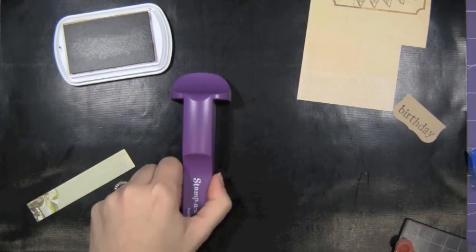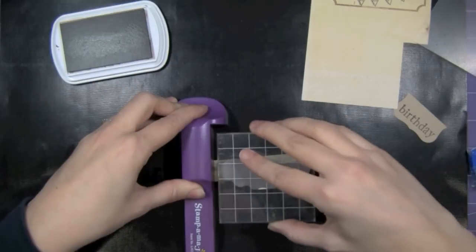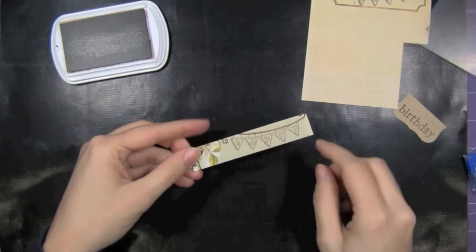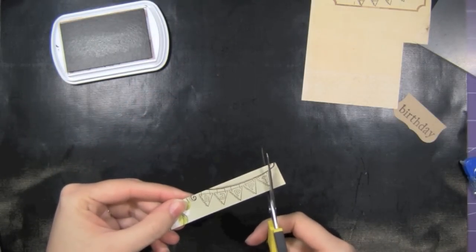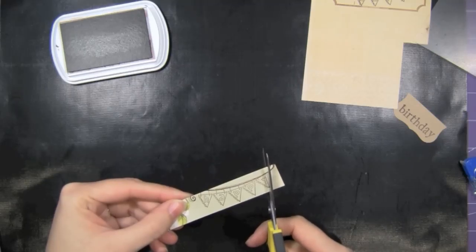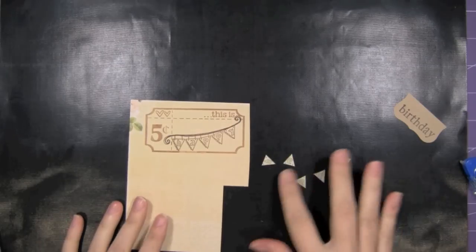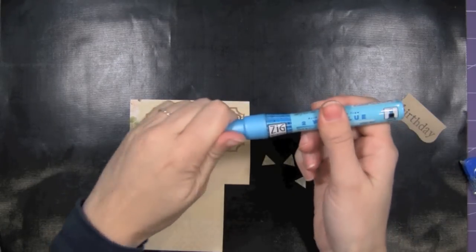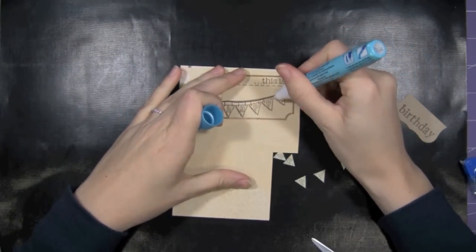And I'm using some dark brown chalk ink. And I want to go ahead and stamp that one more time, and now I'm just going to cut each of these little triangles out. Okay, so I have all my little pieces cut out here. This time I'm just going to use a glue pen and glue them all into place on here.